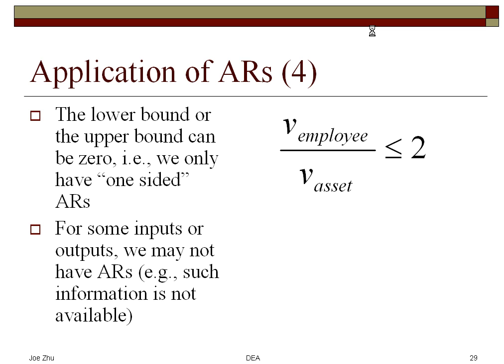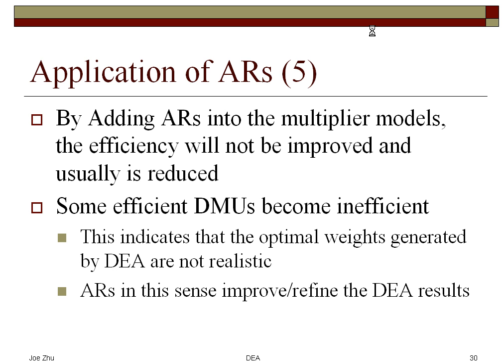Each ratio constraint must be converted into two linear constraints to solve it in an LP. In some cases you may have only one side of the constraint — either a lower or upper bound — so you don't have to have both. By introducing those assurance regions into the multiplier models, efficiency will not be improved and is usually actually reduced; even some efficient frontier DMUs will become inefficient. This is because without the ARs the weights associated with efficient DMUs may not be realistic. The assurance regions in this sense improve and refine the results. If you add assurance regions for all inputs and outputs, the weights will usually be positive, so you don't have to worry about choosing a proper value for epsilon.